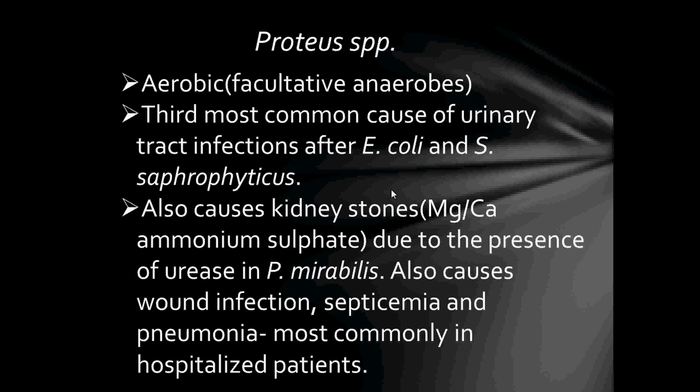Proteus species are aerobic, facultative anaerobes, and the third most common cause of urinary tract infections after Escherichia coli and Staphylococcus. They also cause kidney stones — magnesium calcium ammonium sulfate — due to the presence of urease and Proteus mirabilis, which increases the alkalinity of urine. They also cause wound infection, septicemia, and pneumonia, most commonly in hospitalized patients.